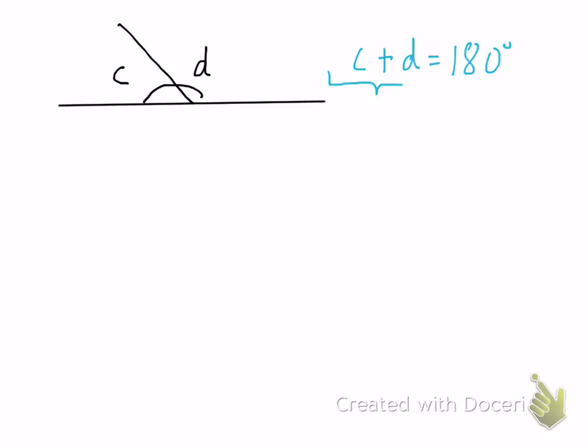Now because C and D add up to 180 degrees, C and D will be called supplementary.